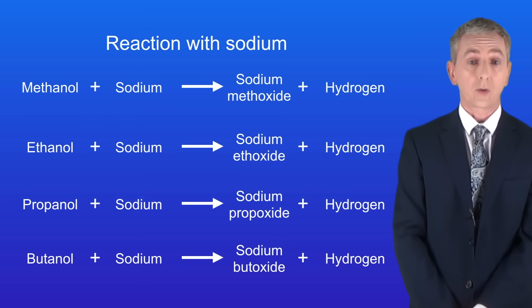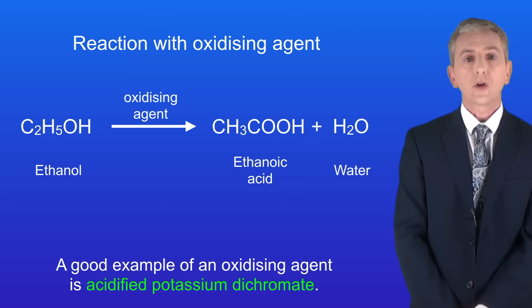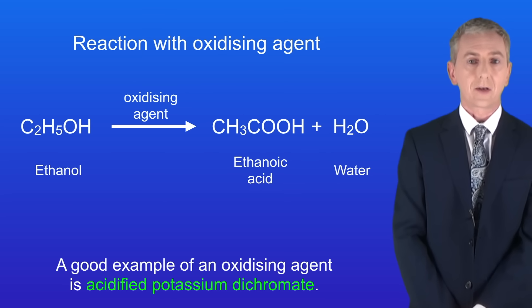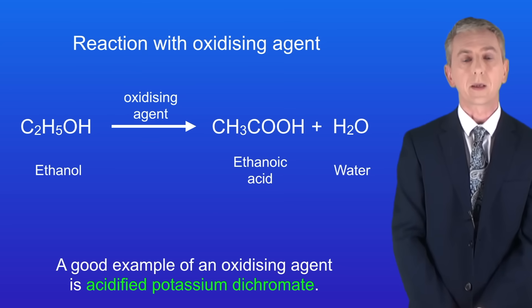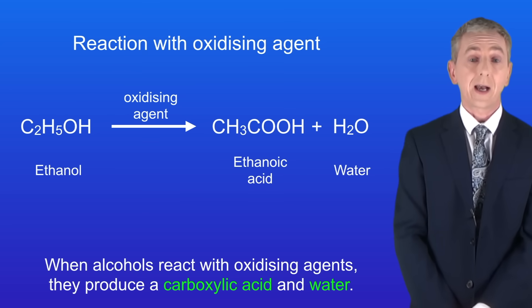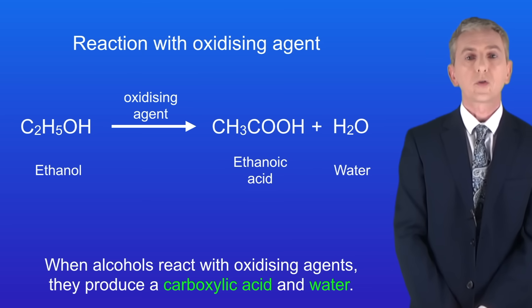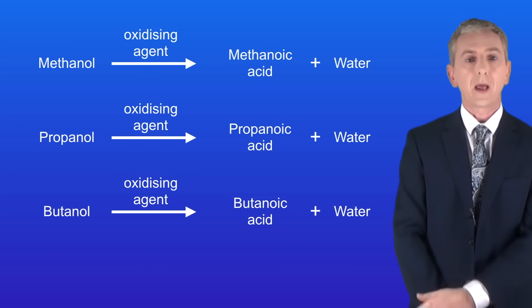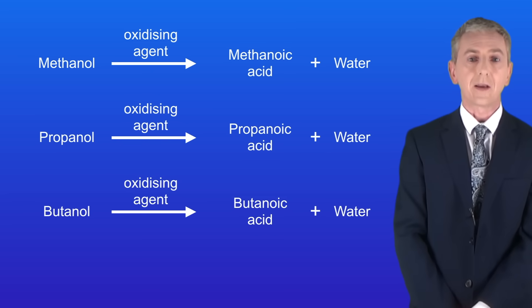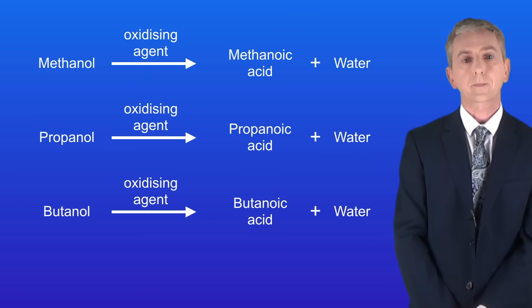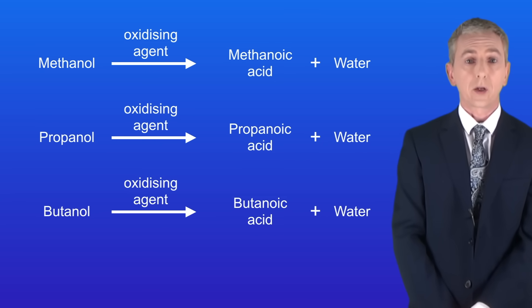The next reaction we're going to look at is with oxidizing agents. I'm showing you ethanol reacting with an oxidizing agent here. A good example of an oxidizing agent is acidified potassium dichromate. When alcohols react with oxidizing agents they produce a carboxylic acid and water. In the case of ethanol we've made ethanoic acid. The reactions of methanol, propanol and butanol with an oxidizing agent also each produce a carboxylic acid.